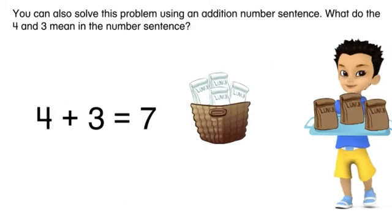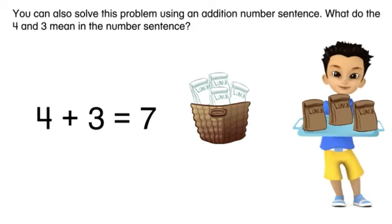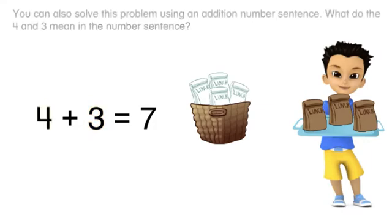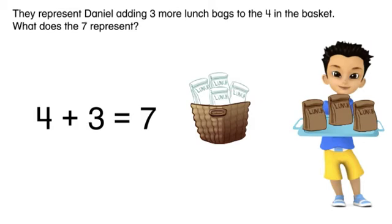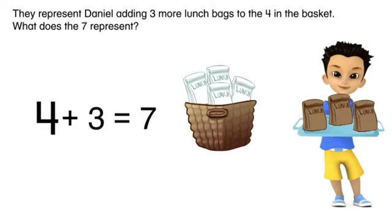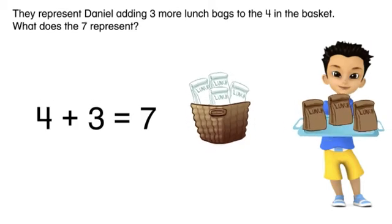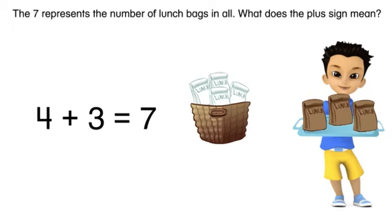You can also solve this problem using an addition number sentence. What do the four and three mean in the number sentence? They represent Daniel adding three more lunch bags to the four in the basket. What does the seven represent? The seven represents the number of lunch bags in all.